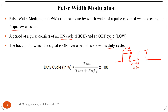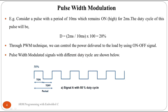Whenever we talk about any signal, this is the on time and this is the off time. If we change this on time and off time, we can get different duty cycles. Based on this duty cycle we can change the output current delivered to the particular port pins of the microcontroller. Consider an example: a pulse with a period of 10 milliseconds which remains on for 2 milliseconds. The duty cycle will be 2ms divided by 10ms into 100, which is 20 percent.